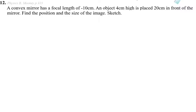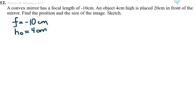Here's another example with convex mirrors. A convex mirror has a focal length of negative 10 centimeters. Sometimes they will tell you it is negative, sometimes they will not, but you have to remember that convex mirrors have a negative focal point — they all have an imaginary image. An object of height four centimeters is placed 20 centimeters in front of the mirror.